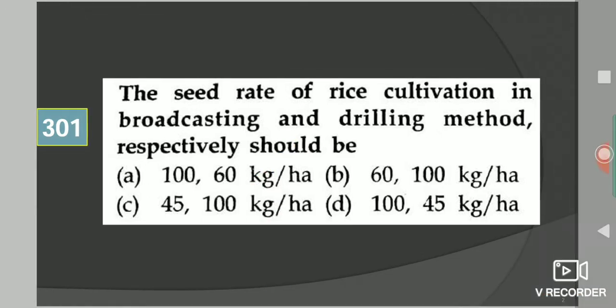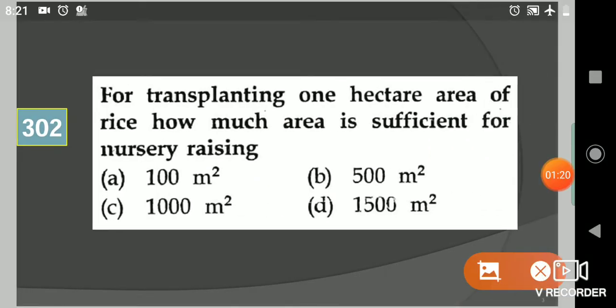Come to the next question: For transplanting one hectare area of rice, how much area is sufficient for nursery raising? Your options are 100 meter square, 500 meter square, 1000 meter square, or 1500 meter square. Your answer is 1000 meter square. Remember one thing: when you are calculating in nursery, that will be your actual area divided by 10. So one hectare means 10,000 meter square, so your nursery raising will be 1 by 10 of that, which is 1000 meter square. Just remember this.